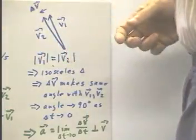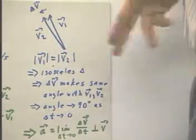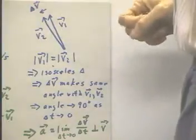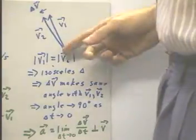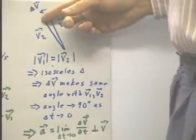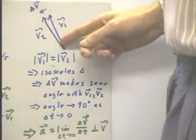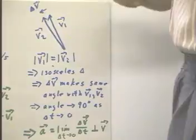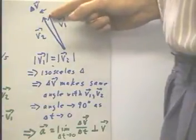The three vectors would form a triangle. If the magnitudes of v1 and v2 are equal, corresponding to motion around the circle at a constant speed, then what we have here is an isosceles triangle. This isosceles triangle has an apex angle, which, if delta v is small, is very small, and then two equal angles here and here.